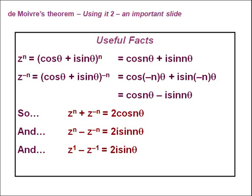Adding these together, we get the relationship: zⁿ + z⁻ⁿ = 2cos(nθ). If we subtract, we get zⁿ − z⁻ⁿ = 2i·sin(nθ). And finally, replacing n with 1, we have z − z⁻¹ = 2i·sinθ.